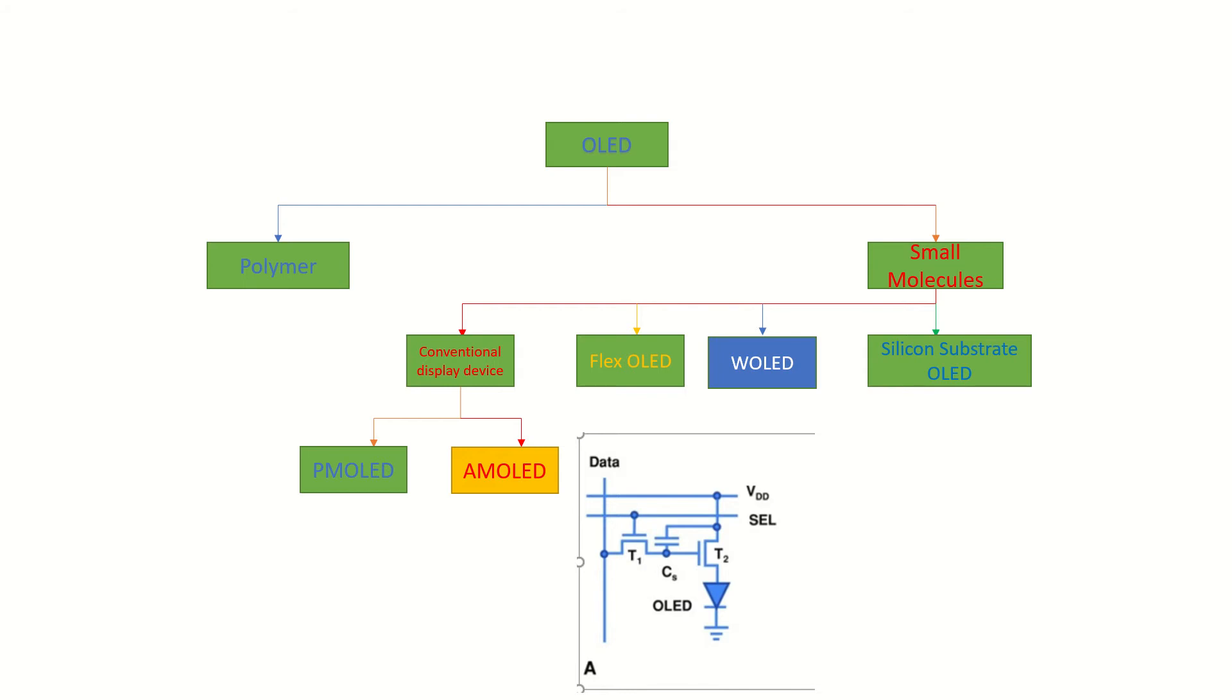The data will be stored in the capacitor called CS. The voltage of the capacitor will control the current flow through the OLED. During the non-scanning period, the capacitor will maintain T2 working status, which is the switch, until the next scanning period is coming. And it can be used for large scale and high resolution display.